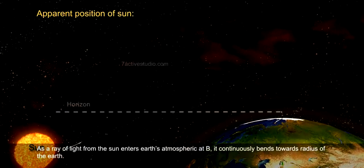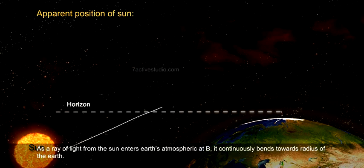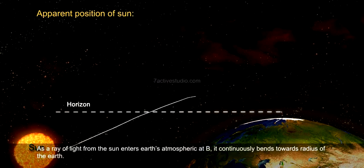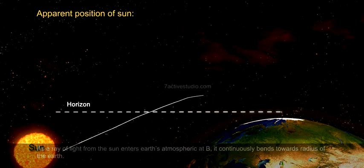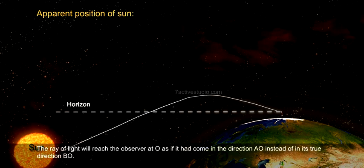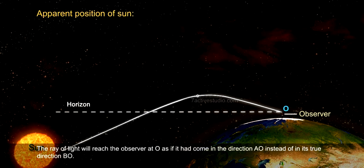As a ray of light from the sun enters earth's atmosphere at B, it continuously bends towards the radius of the earth. The ray of light will reach the observer at O,